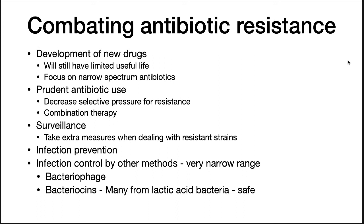A second approach is combination therapy, where you use two drugs — the microorganism then has to be resistant to both, which can eliminate resistance because at least one will kill the organism. Surveillance is also important: by taking extra measures with resistant strains and being aware of where they're appearing, we can adjust the drugs we use and decrease the incidence of resistant organisms. Infection prevention is always a good idea.